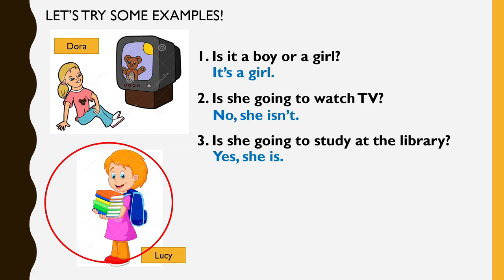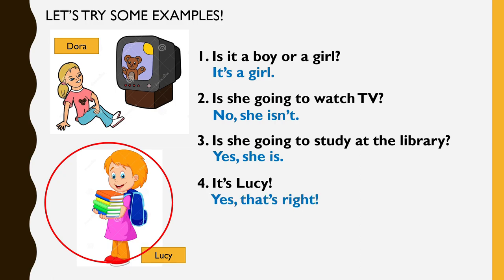Number four. Kalau dah habis tiga soalan dah dijawab ini, rasanya kamu sudah tahu kan? Jadi kamu akan memberitahu apakah tekaan jawapan kamu pada cikgu. So kamu akan kata: It's Lucy. Jadi cikgu akan jawab: Yes, that's right. Senang, kan?